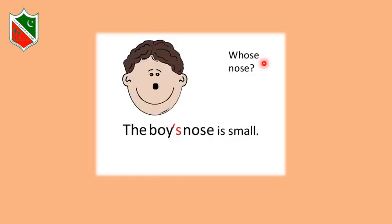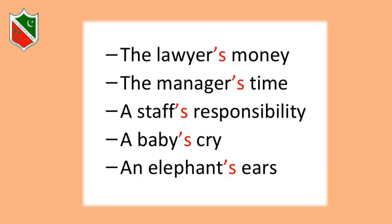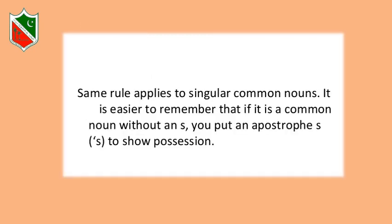Another example: whose nose? The boy's nose is small. The boy is singular, but we have added apostrophe with S to show possession of the nose which belongs to the boy. More examples: the lawyer's money, the manager's time, a staff's responsibility, a baby's cry, and an elephant's ears. The same rule applies to singular common nouns — if it is a common noun without an S, you put apostrophe S to show possession.